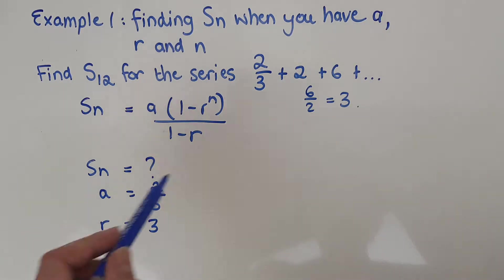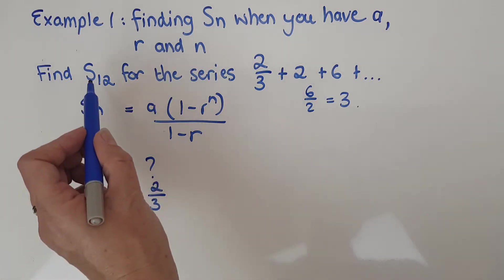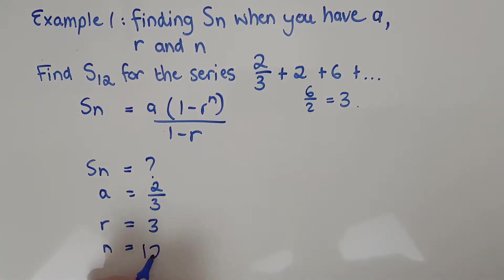So I have all of those. What's left? n. Do I have n? I do, actually, because it's the sum to 12 terms. So I've got the 12 over there. So subbing into the formula...